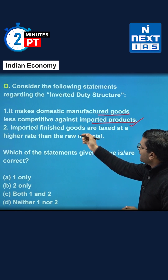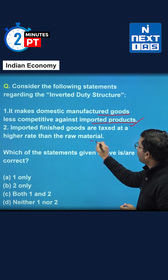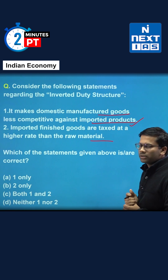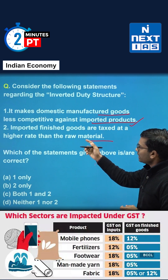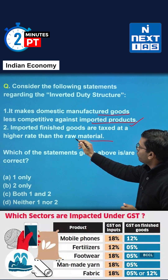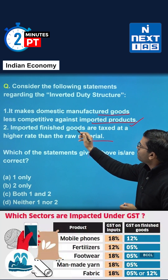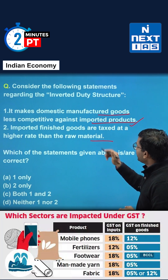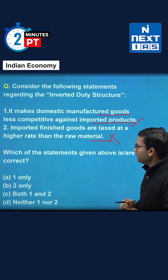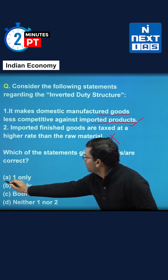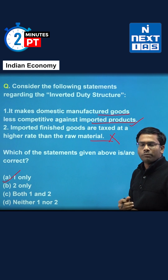Our second statement says that imported finished goods are taxed at a higher rate than raw material. As we discussed, in inverted duty structure the rate of taxation for raw material is high in comparison to imported finished goods. So this second statement becomes false. Therefore, our right answer is statement one only, that is option A. Congratulations to those of you who marked the right answer.